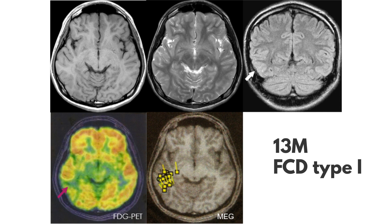A case of focal cortical dysplasia type 1 is shown, which is difficult to detect on MRI. FDG PET shows a hypometabolic area in the posterior part of the right temporal lobe, which coincides with the localization of spike sources on magnetoencephalography.